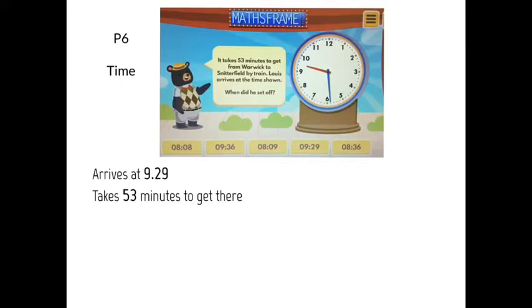So, arrival 9:29, and it took 53 minutes to get there. For this question, you've got to work backwards. You are taking away 53 minutes from 9:29. From 9 o'clock to 9:29, that would have taken 29 minutes. 53 take away 29 minutes gives us 24 minutes left. So we then remove 24 minutes from 9 o'clock.